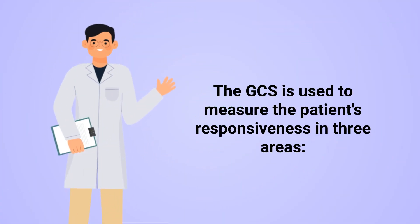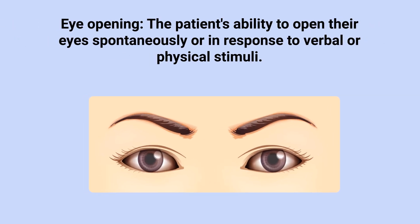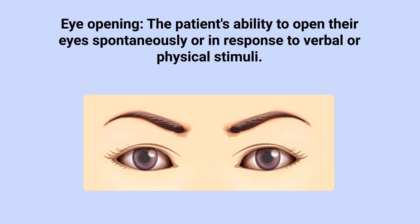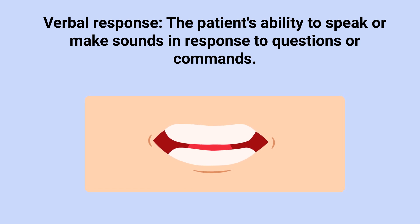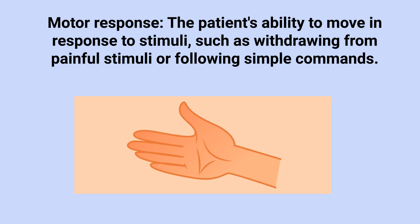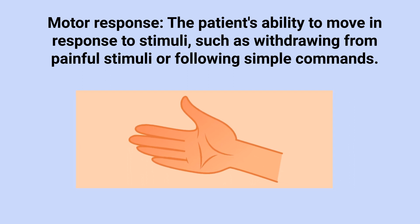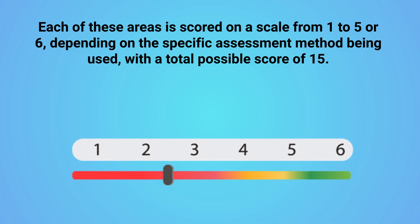The Glasgow Coma Scale is used to measure the patient's responsiveness in three areas: eye opening, which is the patient's ability to open their eyes spontaneously or in response to verbal or physical stimuli; verbal response, which is the patient's ability to speak or make sounds in response to questions or comments; and motor response, which is the patient's ability to move in response to stimuli, such as withdrawing from a painful stimulus or following simple commands.